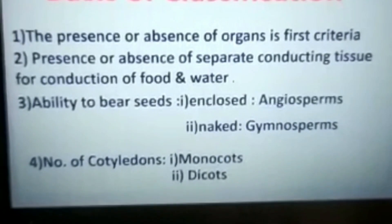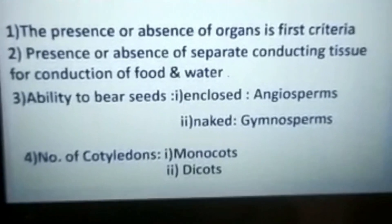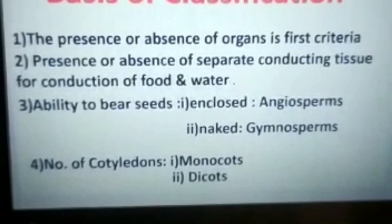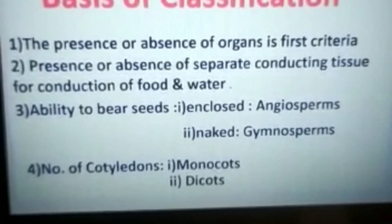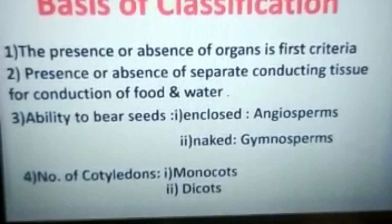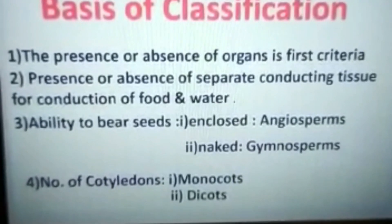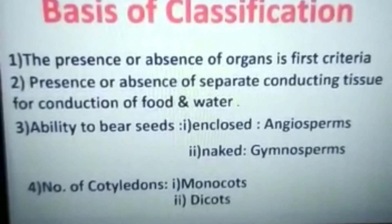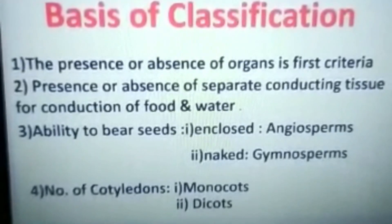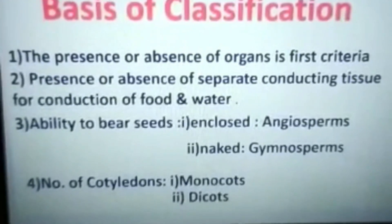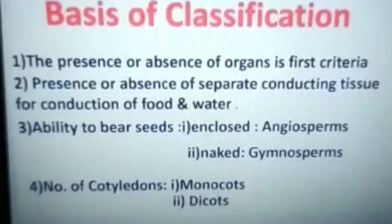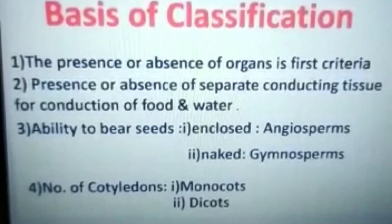The presence or absence of organs is the first criteria for classification of plants. The presence or absence of conducting tissue for conduction of water and food is the next consideration. Whether the plants bear seeds, and if they do, whether the seeds are enclosed in a fruit or not, is also an important criteria. Finally, plants are grouped depending upon the number of cotyledons in the seeds.